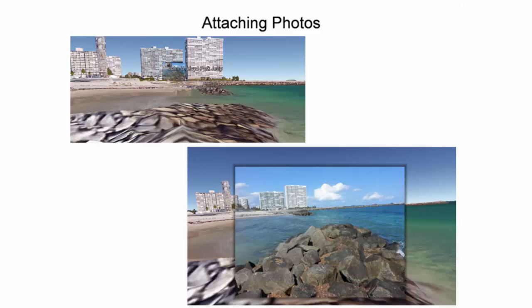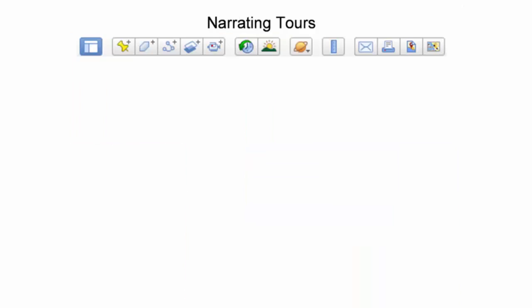Depending upon the resolution of the camera image, the detail in the overlaid image often exceeds the detail seen in the 3D Buildings layer. Creating KML tours in Google Earth is an excellent way to lead viewers through a series of locations.